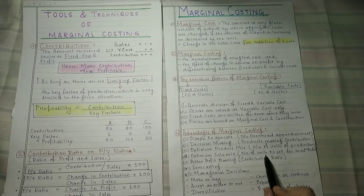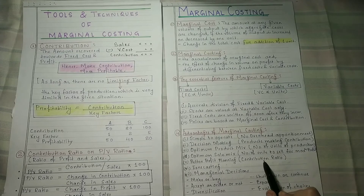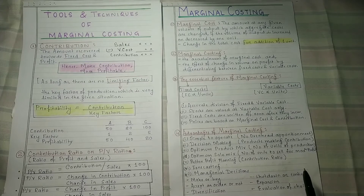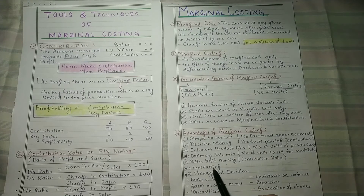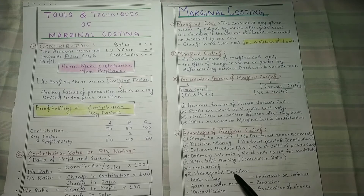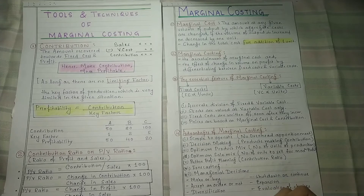We can determine the number of units to sell for maximum profit and how we should keep our sales mix to get maximum profit. The fifth advantage is better profit planning — when we know the contribution ratio and profitability ratio, we know the profit planning, which makes it better. Marginal costing is also definitely very helpful in forecasting.